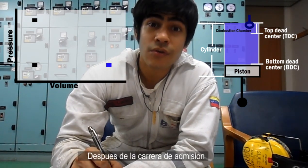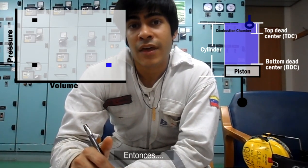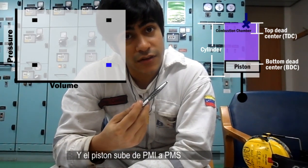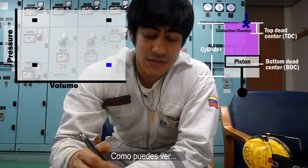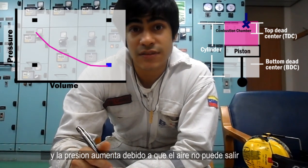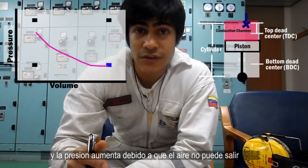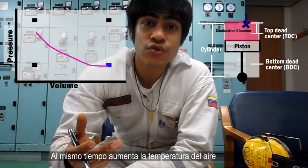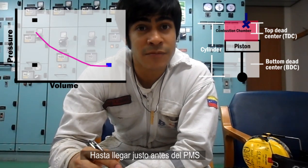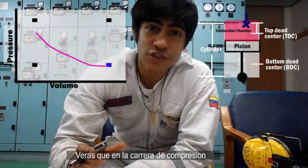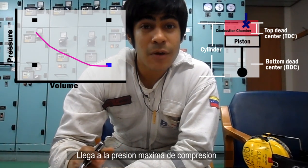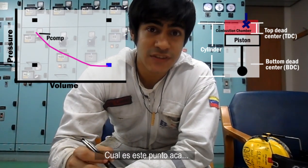After the admission stroke, we have the compression stroke. The inlet valve is closed, and the piston goes from bottom dead center to top dead center. As you can see, volume starts to decrease, and pressure — since the air has nowhere to go — starts to increase. With it, the air also increases in temperature, until we reach just before top dead center. In the compression stroke, when the piston reaches top dead center, it's at the maximum compression pressure, which is this point right here.